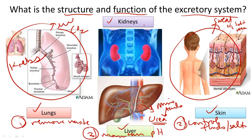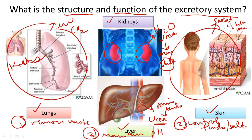And finally, our kidneys. Our kidneys remove excess water and urea from the blood, creating something called urine. Urine exits the body starting with the kidneys, and then travels down to the bladder.